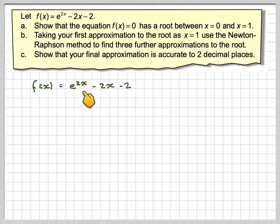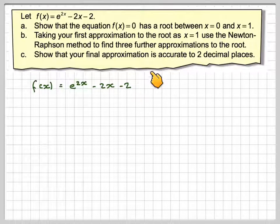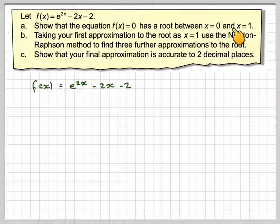So we've got f of x is e to the 2x minus 2x minus 2. So in order to find that there's a root between x is equal to 0 and x is equal to 1, we need to substitute these two values into this function.